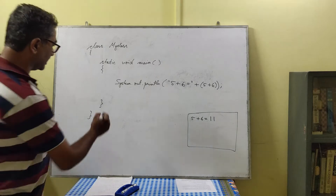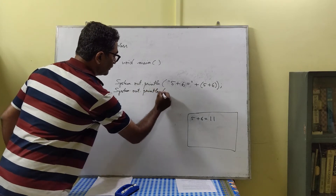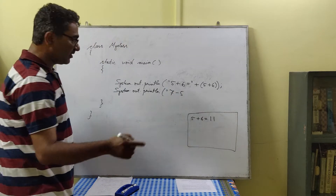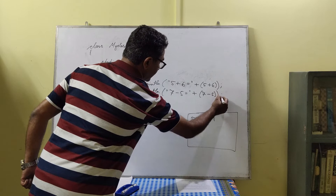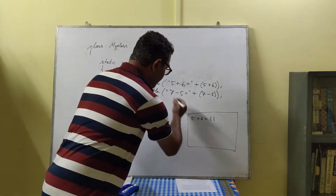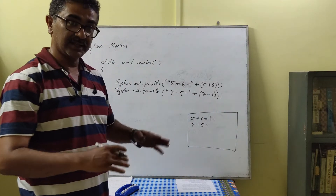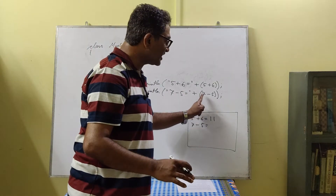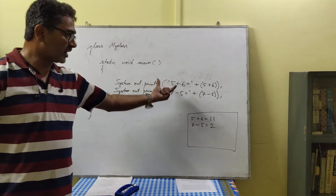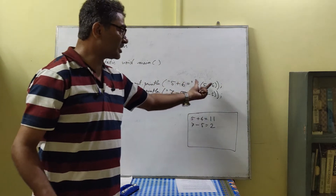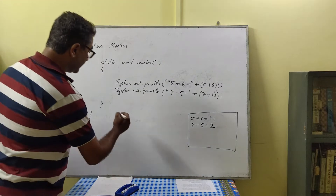Similarly, we can perform subtraction. Adding another statement to subtract 7 and 5: the string '7 minus 5 equal to' is within quotation marks, so it's displayed as-is. The plus here is used for joining, not addition. Then Java evaluates 7 minus 5, which gives 2. These operators — plus and minus — are called mathematical operators.